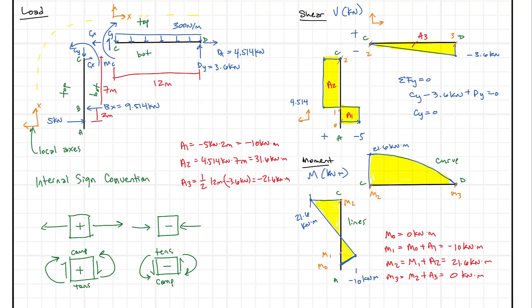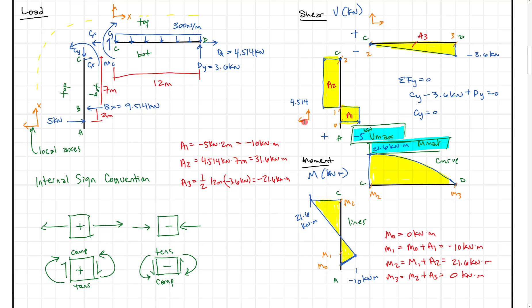From the diagrams we have our answers: the maximum shear V_max is 5 kilonewtons, and the maximum moment M_max is 21.6 kilonewton meters. We solved the problem by creating shear and moment diagrams, which required defining local axes, understanding the internal sign convention, and applying those local axes correctly. I hope that helps and starts you off on two-dimensional shear and moment diagrams — feel free to drop a comment, and keep working hard, moving onward and upward.